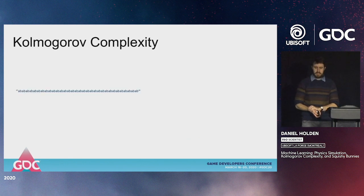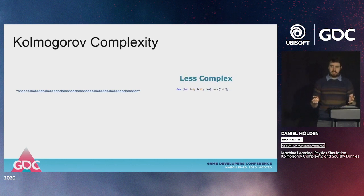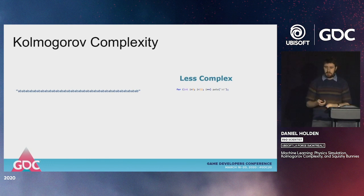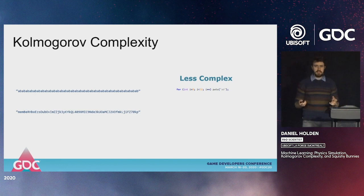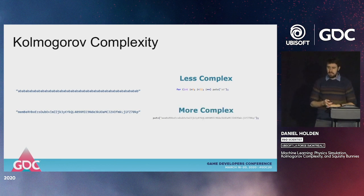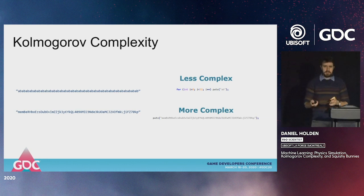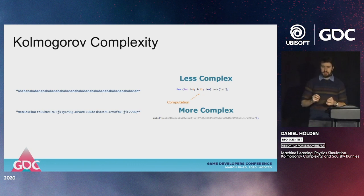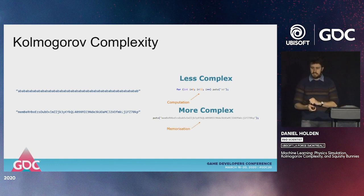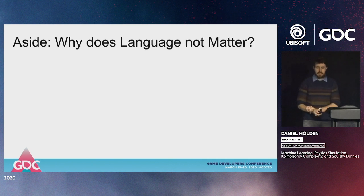Some examples: a string of A and B repeated is not very complex — the function producing it is a simple loop printing A and B. On the other hand, a string of different random letters may have no program that can compute it easily; the best we can do is print it out verbatim. So a less complex function means more computation, whereas a more complex function means memorization of the output.